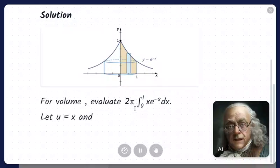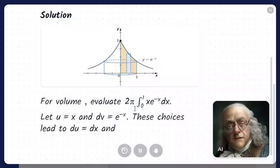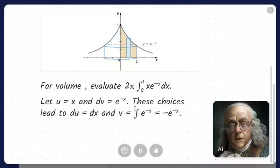To do this, let U equals X and dV equals e to the power of negative X. These choices lead to dU equals dX and V equals negative e to the power of negative X. Substituting this into the integration by parts for definite integral formula, we get the following.